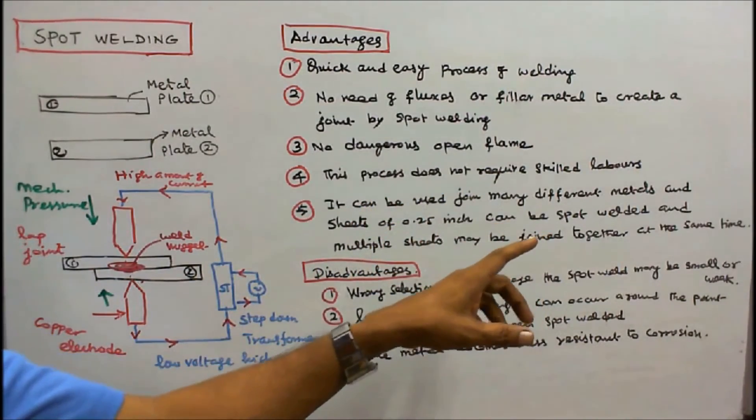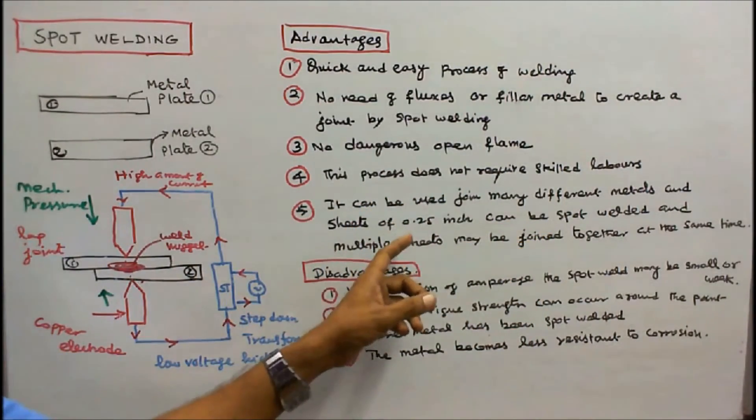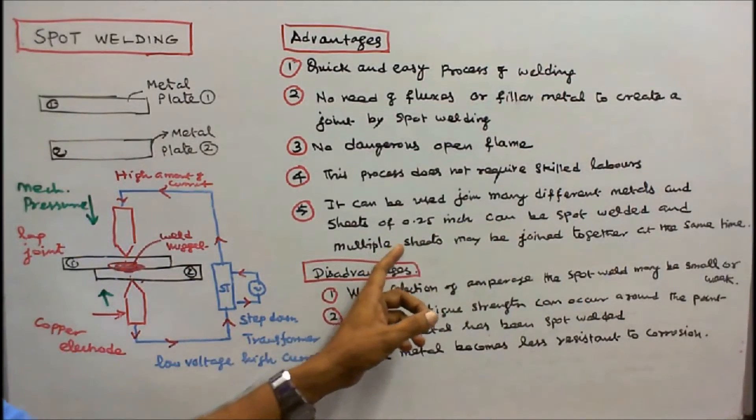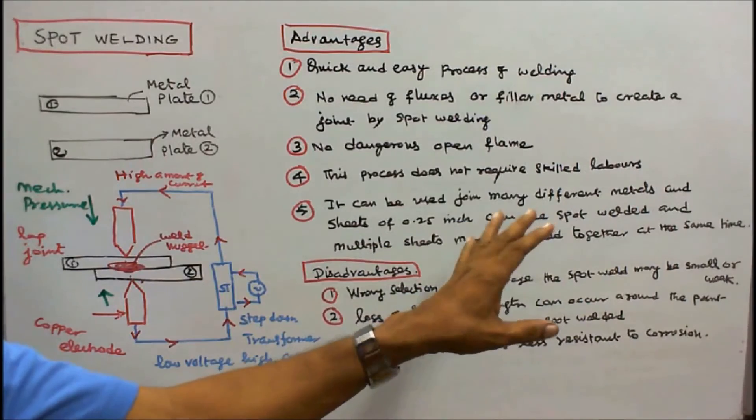Number four, this process does not require skilled labor. Number five, it can be used to join many different metals and sheet of 0.25 inch can be spot welded and multiple sheets may be joined together at the same time.